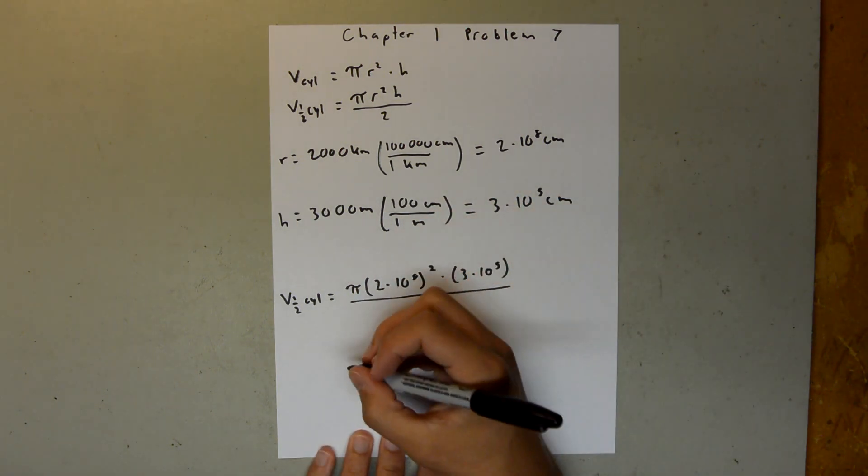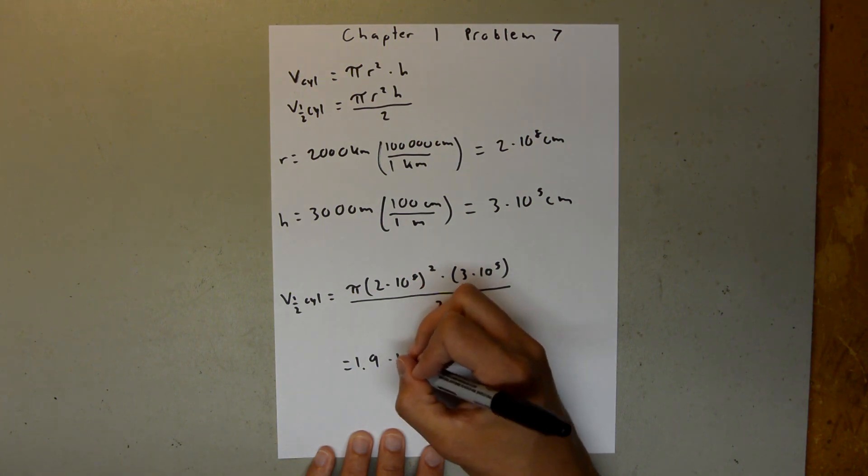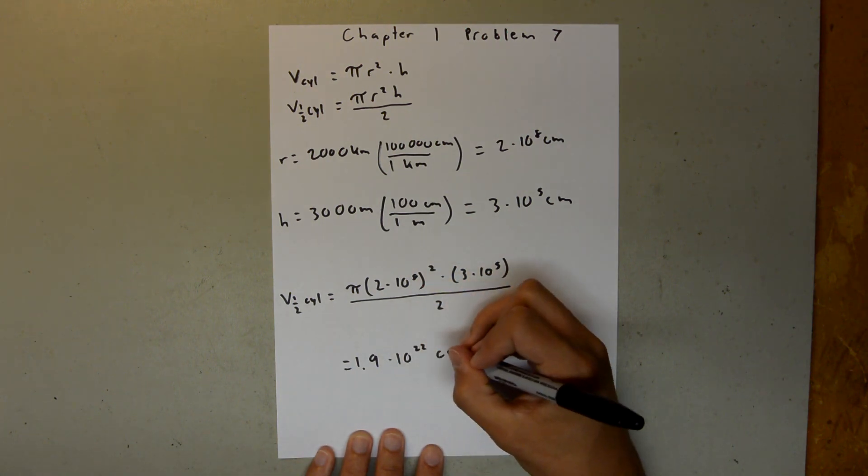And when you plug that into your calculator, you should get 1.9 times 10 to the 22 centimeters cubed.